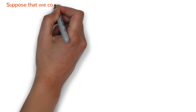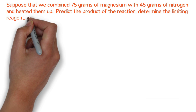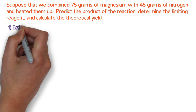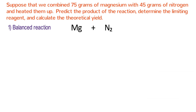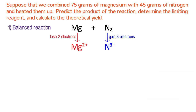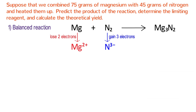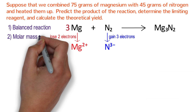Now let's try this with chemicals. Suppose we combine 75 grams of magnesium with 45 grams of nitrogen and heat them. We need to predict the product, determine the limiting reagent, and calculate the theoretical yield. Start by writing the balanced reaction. Magnesium and nitrogen are the reactants — remember nitrogen is diatomic. This is a combination reaction of a metal and nonmetal, giving one ionic product. Magnesium becomes Mg²⁺ and nitrogen becomes N³⁻, so the product is magnesium nitride, Mg₃N₂. Balancing gives: 3Mg + N₂ → Mg₃N₂.